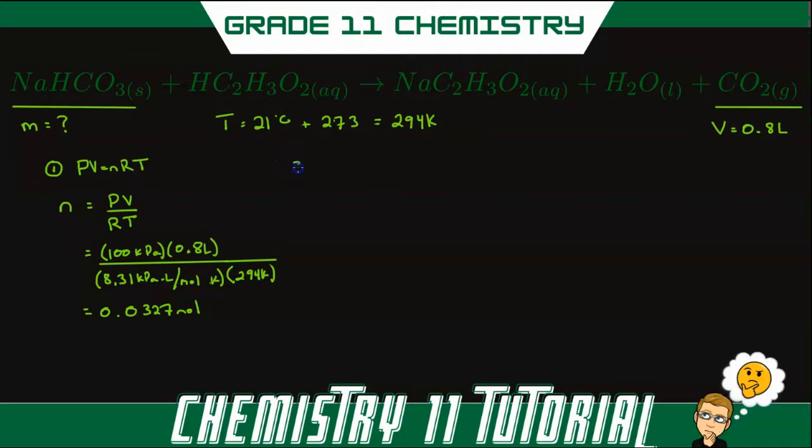Now Step 2 would be to do a mole ratio. But in this case, our equation is already balanced and so all the mole ratios are just ones. So since we know that there is 0.0327 moles of carbon dioxide, we also know the number of moles of baking soda: 0.0327 moles.